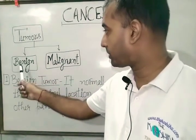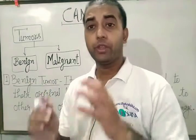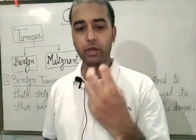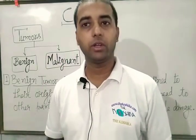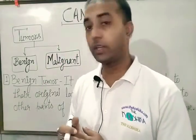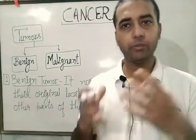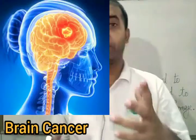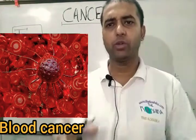Tumor is of two types: benign or malignant. Benign is a little less dangerous — you can say it is slightly less dangerous — and malignant is more problematic. Benign tumor remains in a particular location. Cancer can occur in the mouth, brain, lungs, blood, nose, cervical region, ovary, or breast — many types of cancer are discovered in different locations.